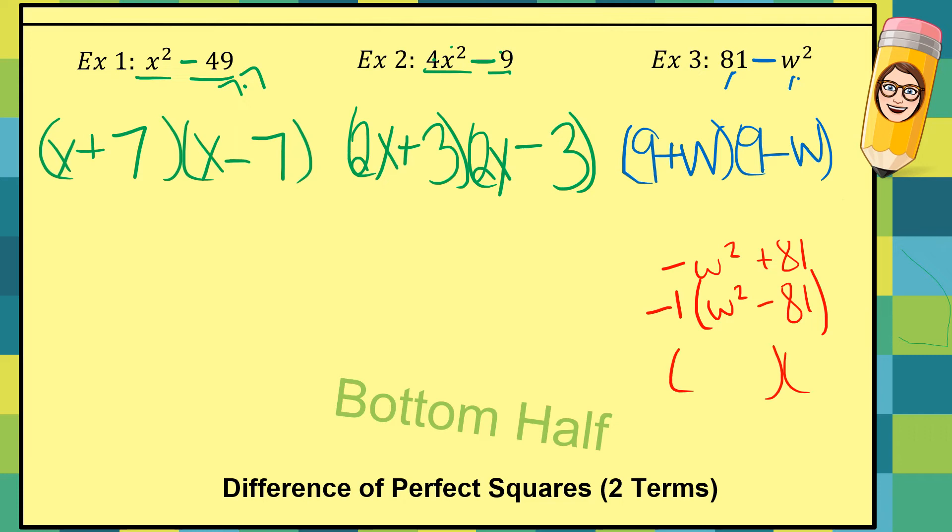Well, then I have my difference of squares, a w, a w, a nine, a nine, a plus, a minus, with this little negative one hanging out front, my GCF. So technically, these two answers are both correct.